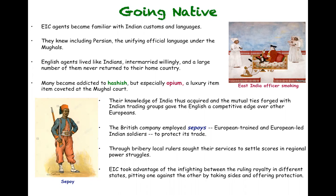Bribery was often used to create alliances with many of the nawabs and other local rulers. The British pitted one ruler off against another, taking advantage of the instability and political situation of the time. That gave them a real upper hand as the influence of the British East India Company spread.